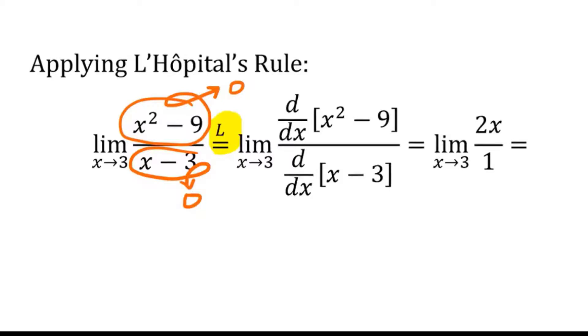So if you're taking notes, and I hope you are, because writing this information down helps your brain process it, make sure that you have the limit written in each step, that you have the 0 and the 0 showing that we have a 0 over 0 indeterminate form, and then you put the L over the equal sign.